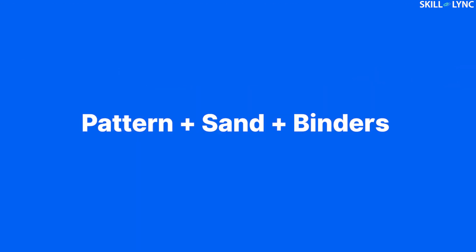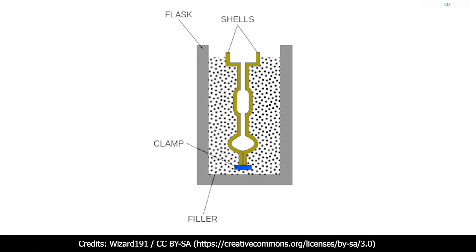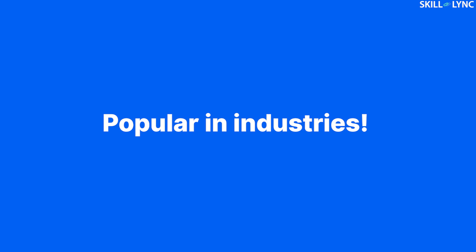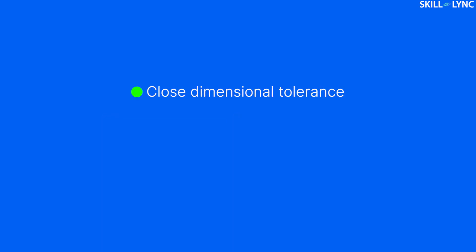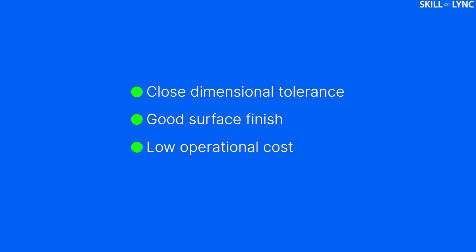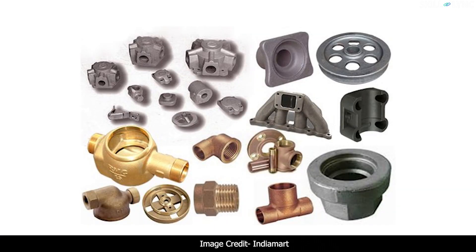We'll start with shell molding. In shell molding, a pattern is mixed with sand and binders to provide a shell-like molding cavity. This is done by the sand which is attached to the pattern due to the action of binders. Then it is baked to remove the moisture content. Finally, the pattern is removed and the shell is obtained. Shell molding is very popular in industries today because it can produce a wide variety of castings with a close dimensional tolerance and a good surface finish. Another huge advantage of shell molding is that its operational cost is low. Using shell molding, small mechanical parts with low precision can be obtained.